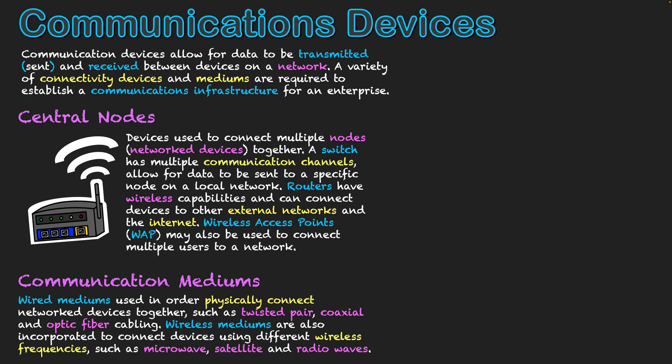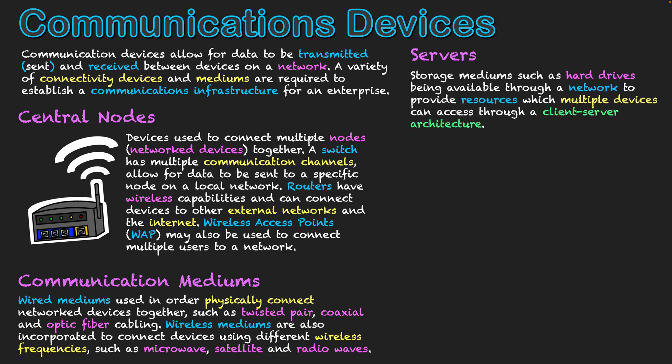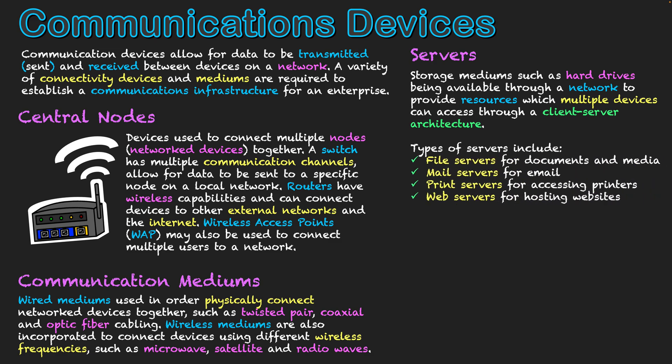Now that we have central nodes and devices connected through mediums, how do we access things stored in the places we're connecting to? That is through servers. Servers make use of storage mediums such as hard drives, which may be stored within RAID storage systems. People who connect to networks and want to use server resources do so through client-server architecture. The computer you're on is the client system, and it makes requests of the server, which is the host providing resources. There are file servers used for storing documents and media, which everyone connected to that network can receive.